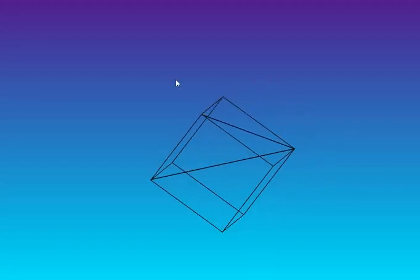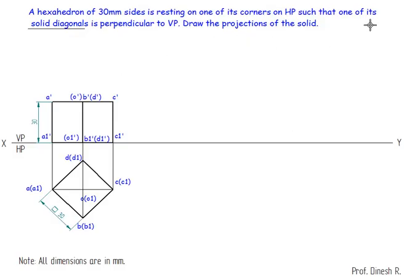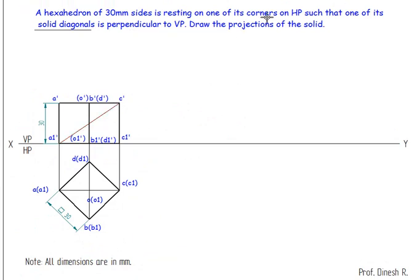We can create four solid diagonals. We are going to consider drawing one of them. We need to make one solid diagonal perpendicular to VP — it won't give an inclination with respect to HP. To do this, first we draw the solid diagonal, then make it parallel to both HP and VP, and then make it perpendicular to VP in the third step.